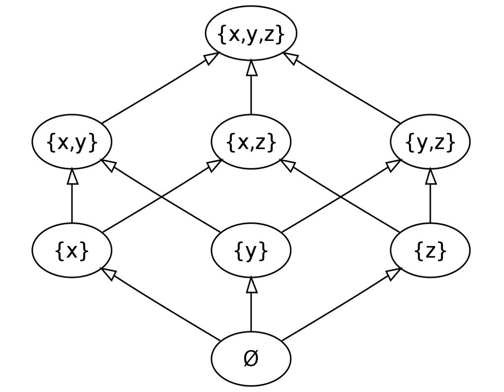Functors and quantifiers: In category theory and the theory of elementary topoi, the universal quantifier can be understood as the right adjoint of a functor between power sets, the inverse image functor of a function between sets. Likewise, the existential quantifier is the left adjoint.